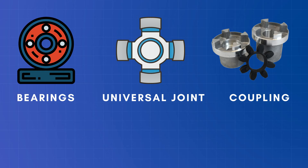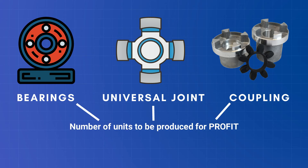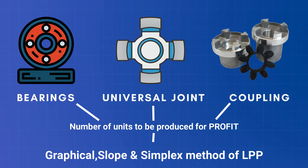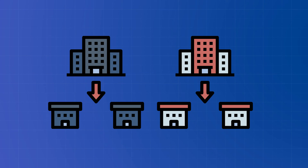And lastly, fifth, implementing the solution to the actual problem. To understand the need to study operations research, suppose you work in a company which manufactures bearings, universal joints, and couplings. If you want to know the optimum number of units to manufacture and sell, you can increase your company's valuation exponentially using OR tools such as graphical analysis, the slope method, or the simplex method.